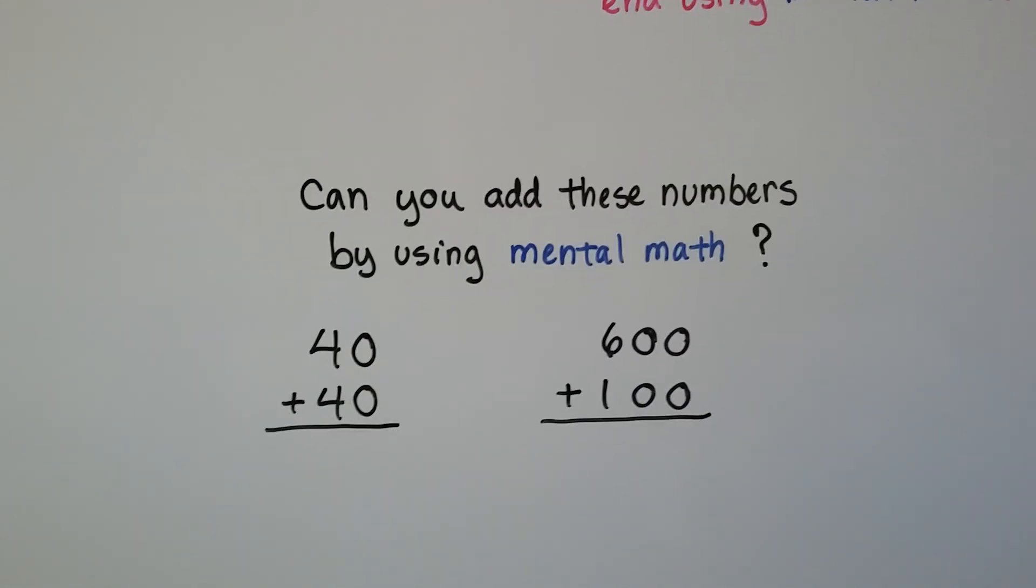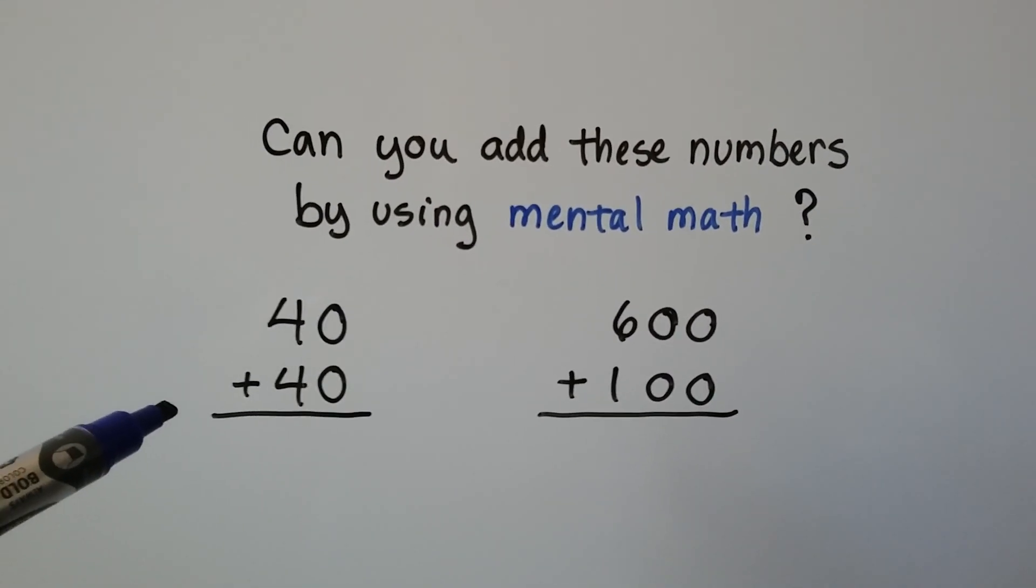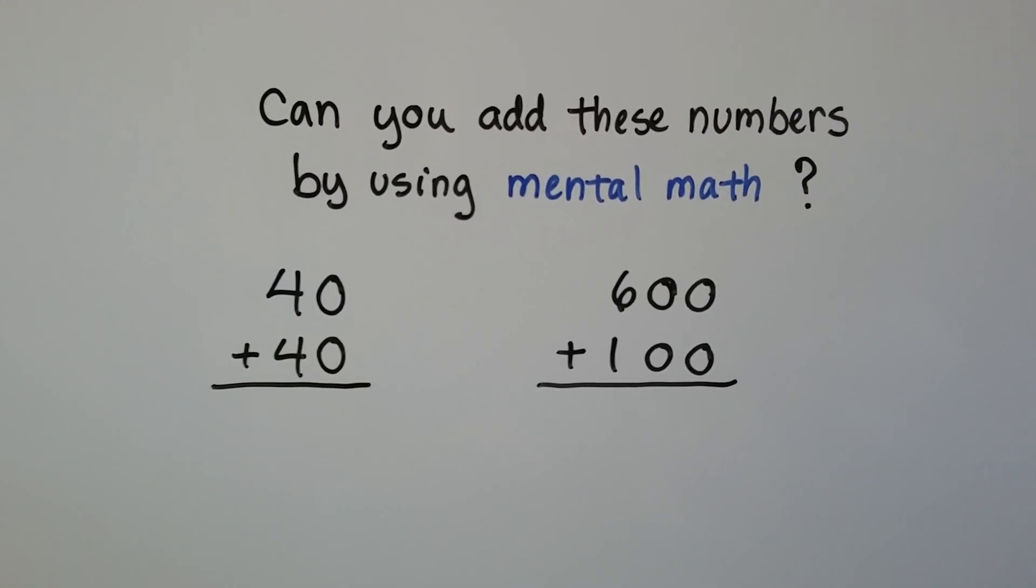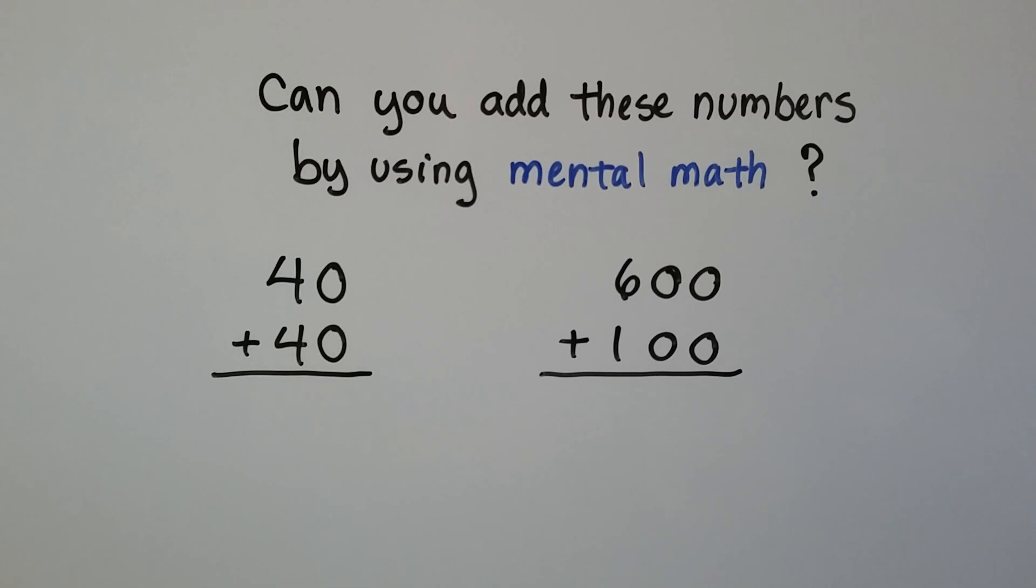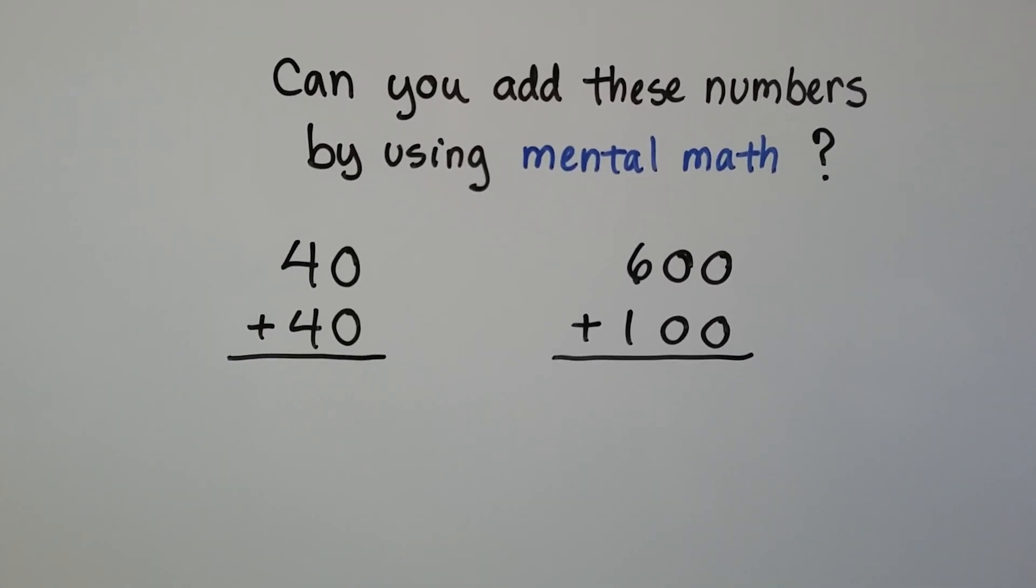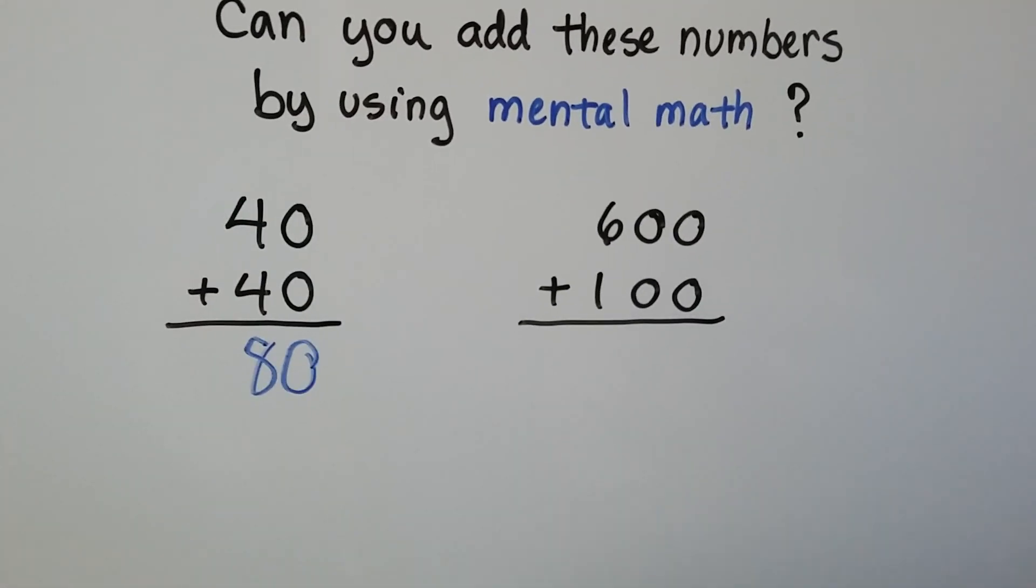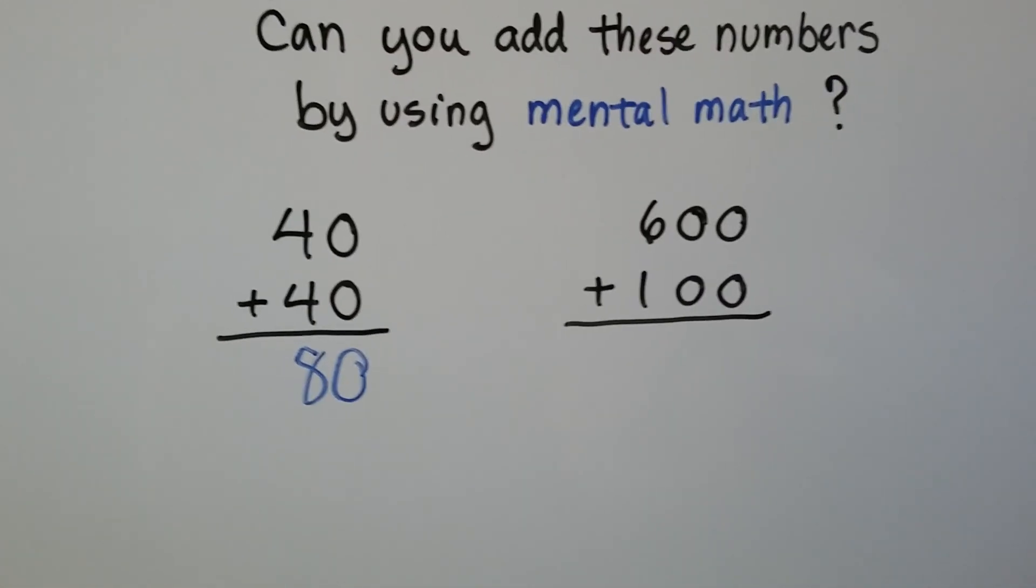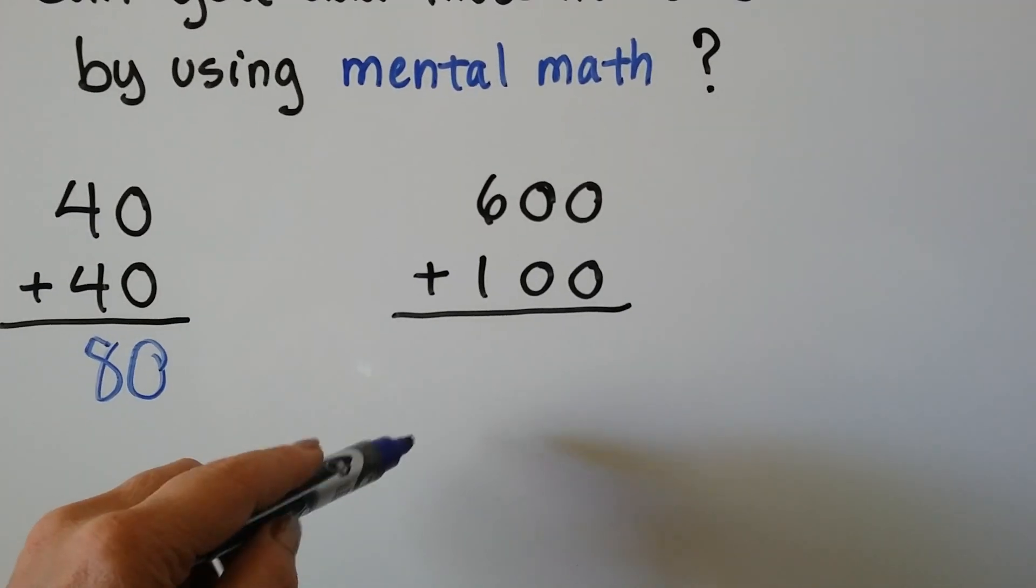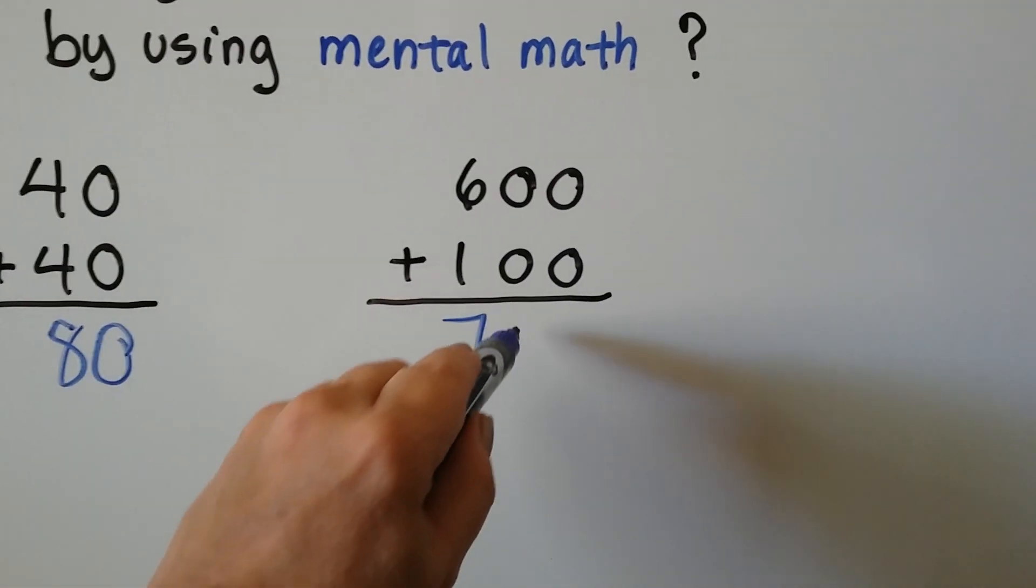Can you add these by using mental math? Can you do these without paper or pencil or without a calculator? Can you add these in your head? What do you think the answer for this one would be? We add the tens place, get an 8, and then we just put the 0 down. It's 80. Can you do this one, mental math? You could probably do it real quick. Add the hundreds place. That would be a 7, and now we just add the two zeros.